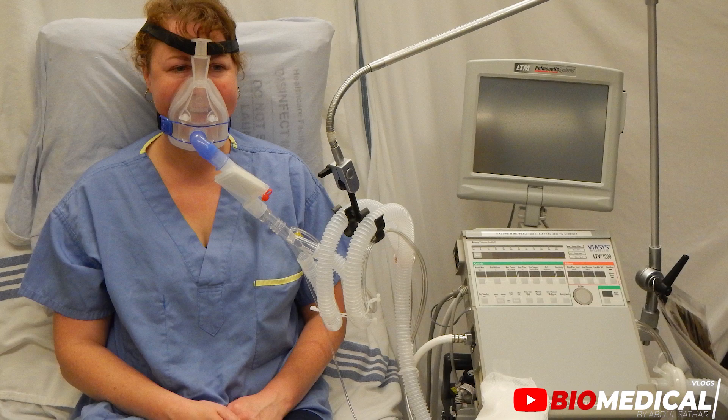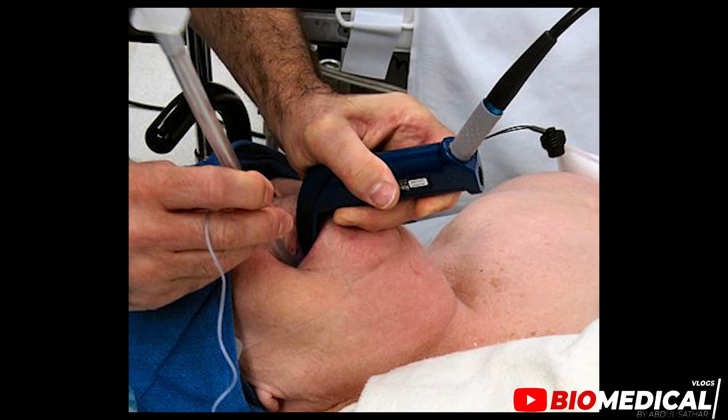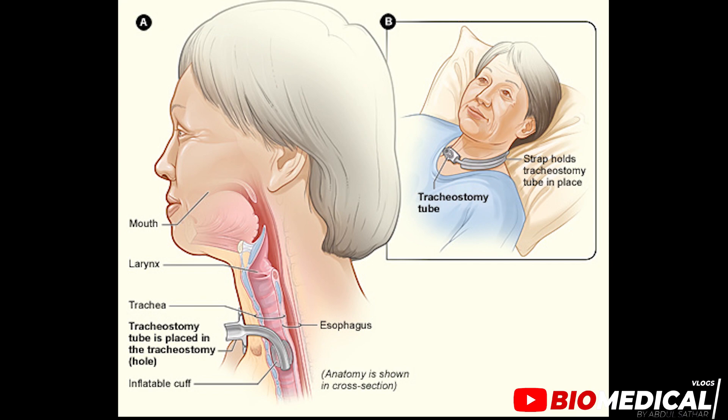In more severe cases an invasive form of respiratory support is required. This is provided through an artificial airway — a tube attached to a ventilator is inserted into the patient's mouth or nose, or through a surgically made hole in the neck.